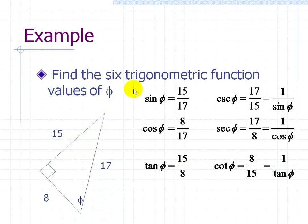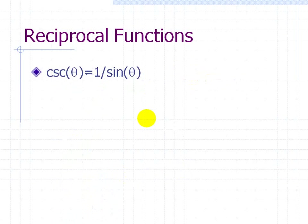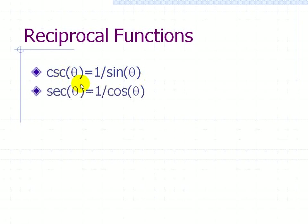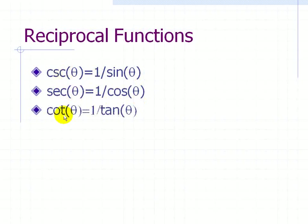So these are the six trigonometric functions associated with the angle phi. As a summary, the reciprocal functions are: cosecant of theta equals 1 over sine of theta, secant of theta equals 1 over cosine of theta, and cotangent of theta equals 1 over tangent of theta.